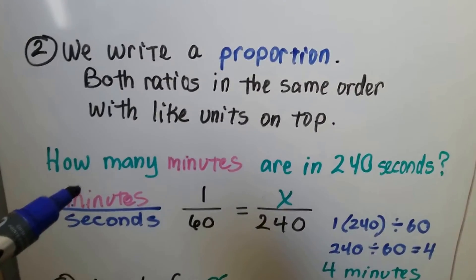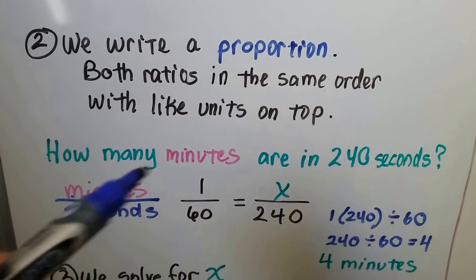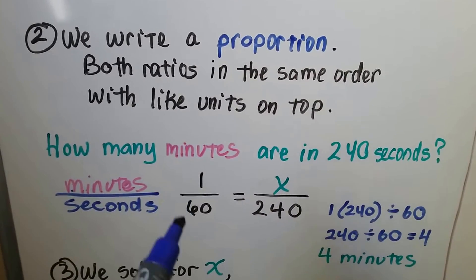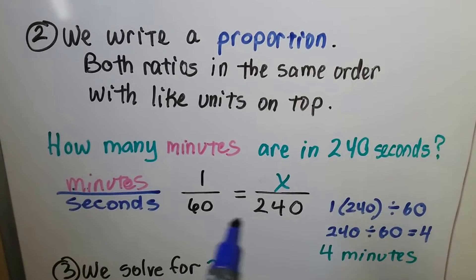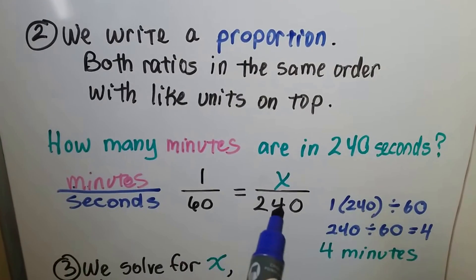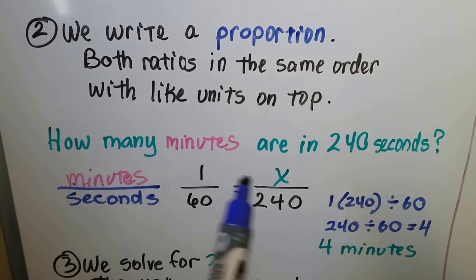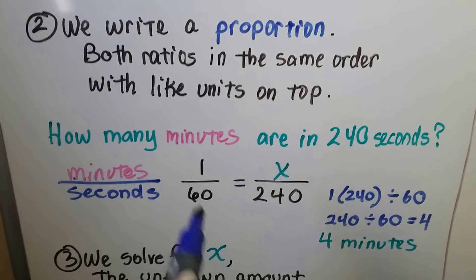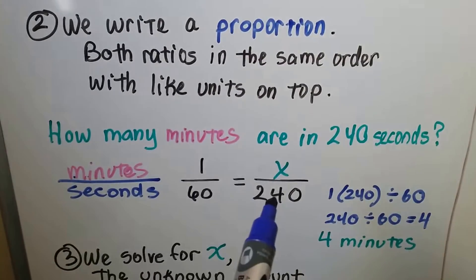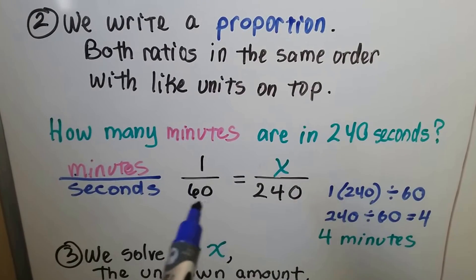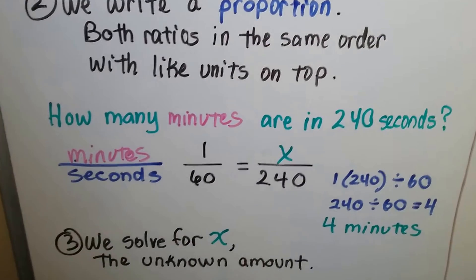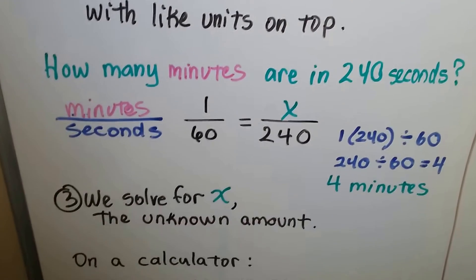Whichever one we're looking for is going to be the numerator. So we're looking for minutes. We know one minute is 60 seconds, so we can write a proportion. There's 240 seconds. The 60 becomes a 240. The 1 becomes whatever x is. We cross-multiply. 1 times 240 is 240. We divide it by this third number here, the 60, and we get 4 minutes. We solve for x, that unknown amount.